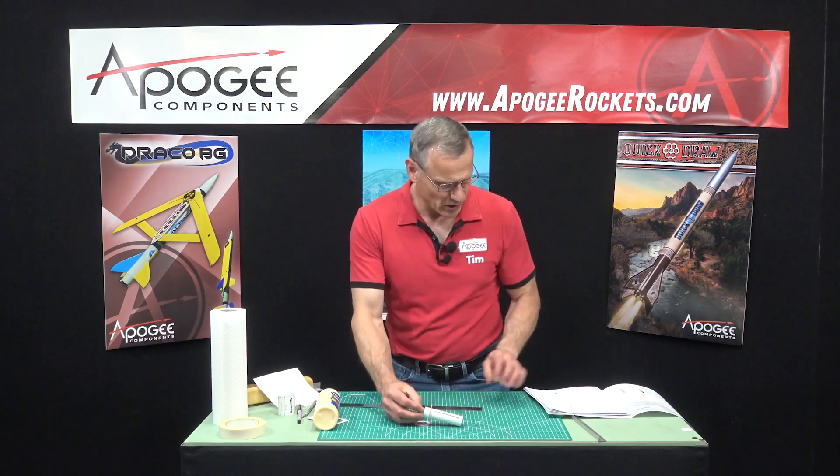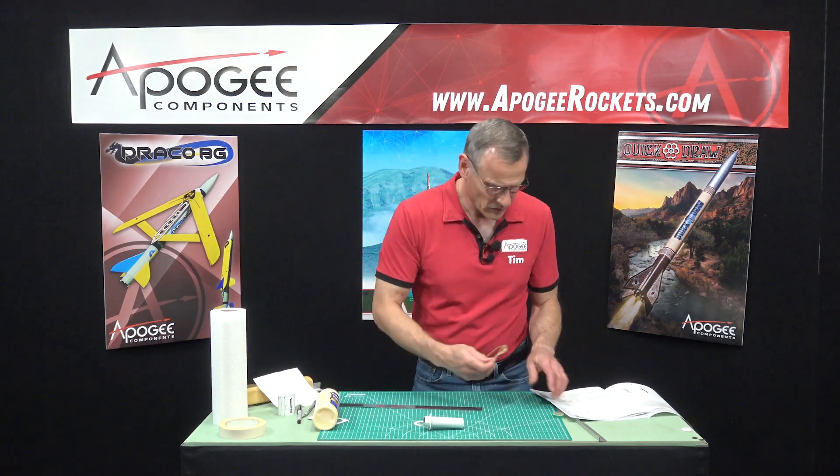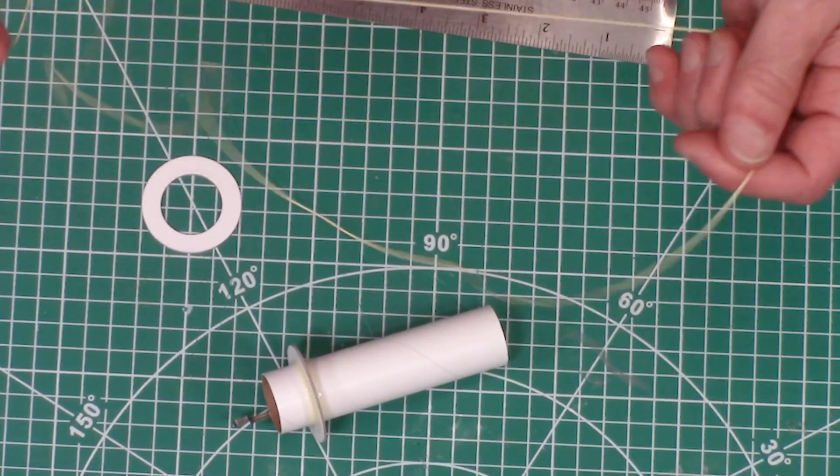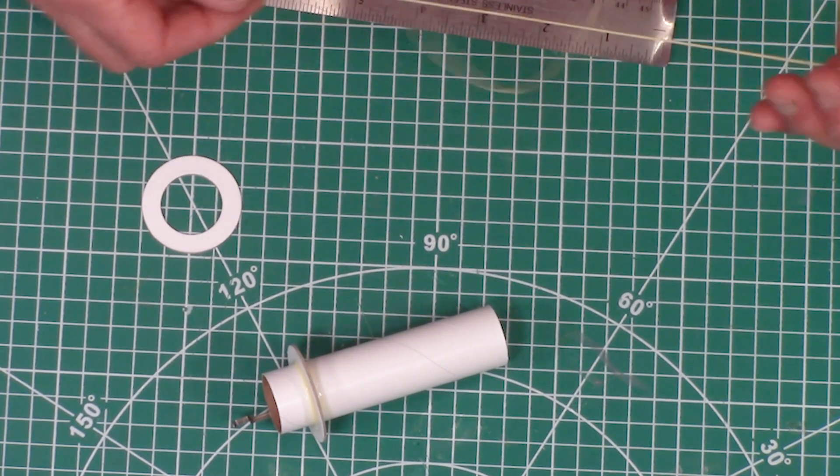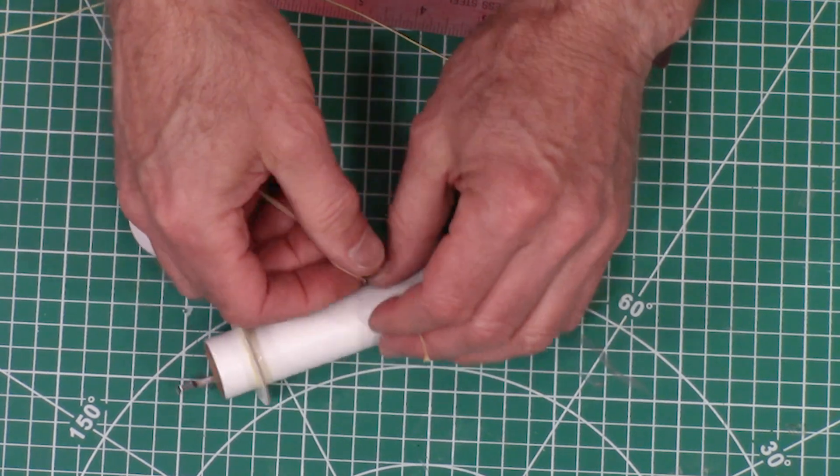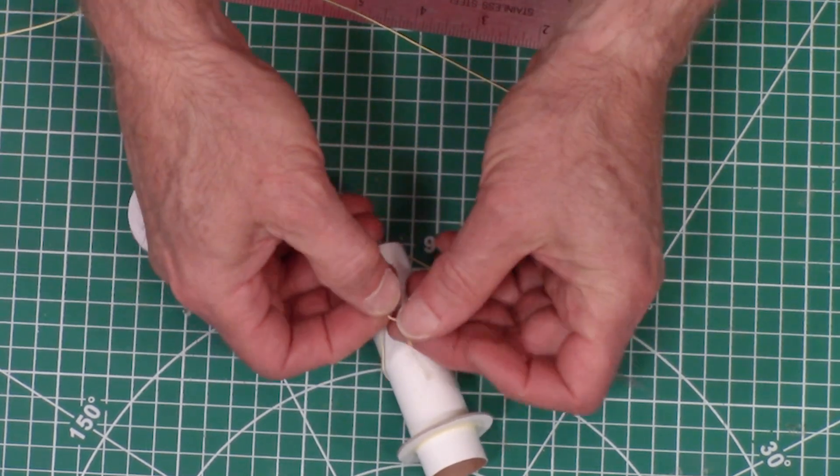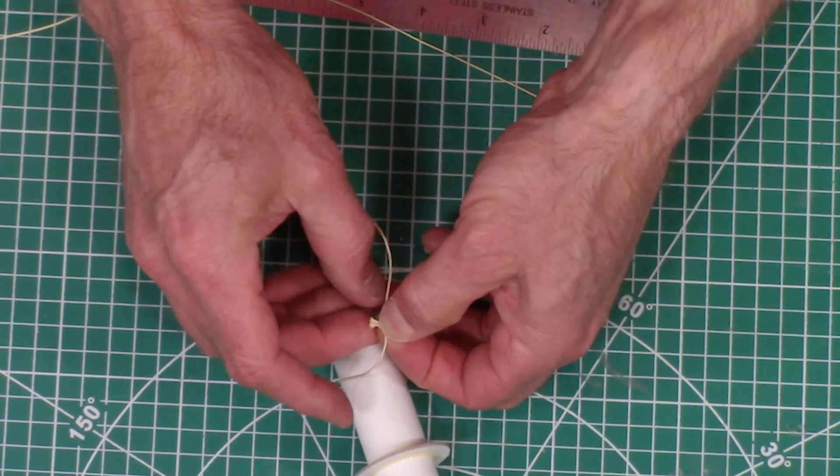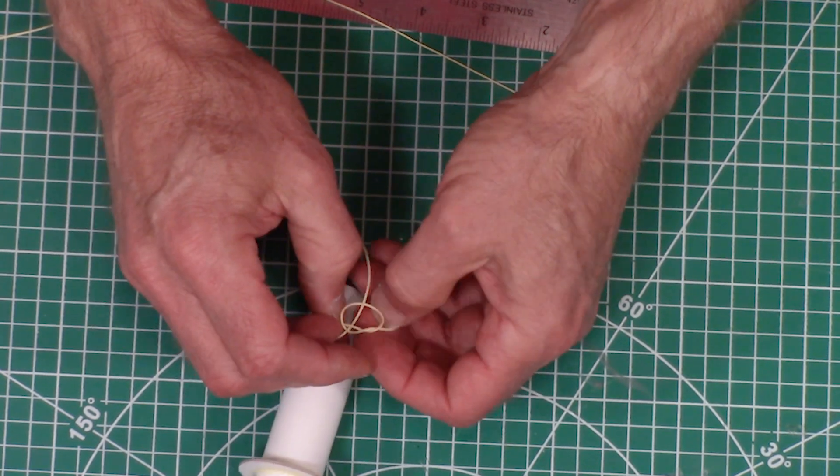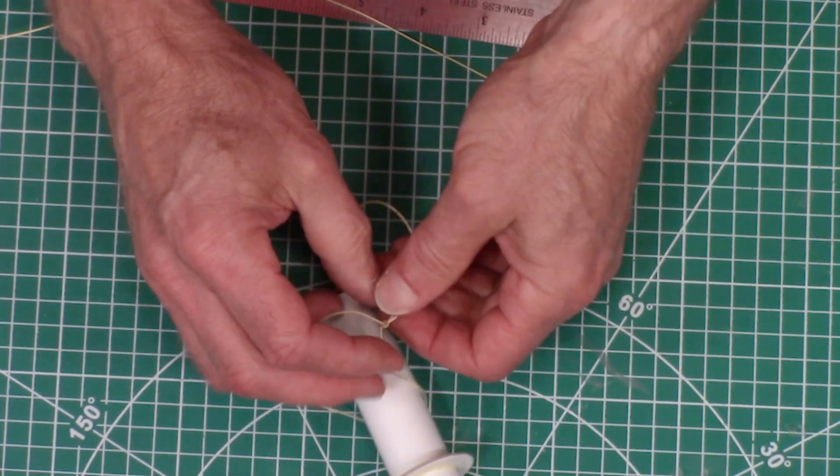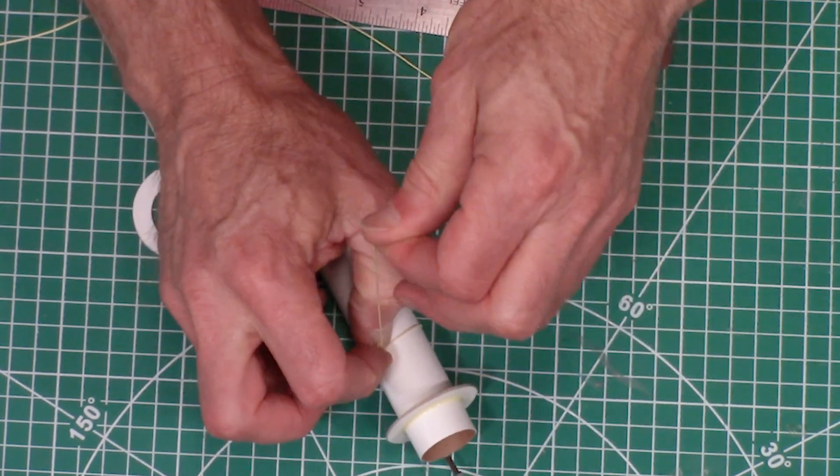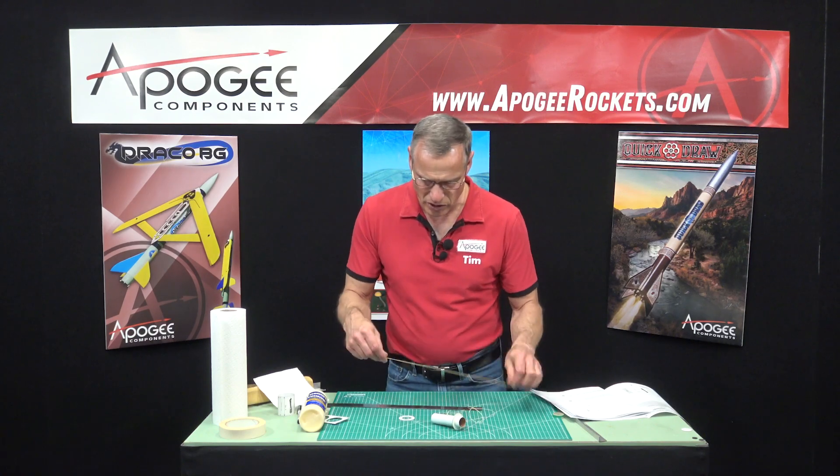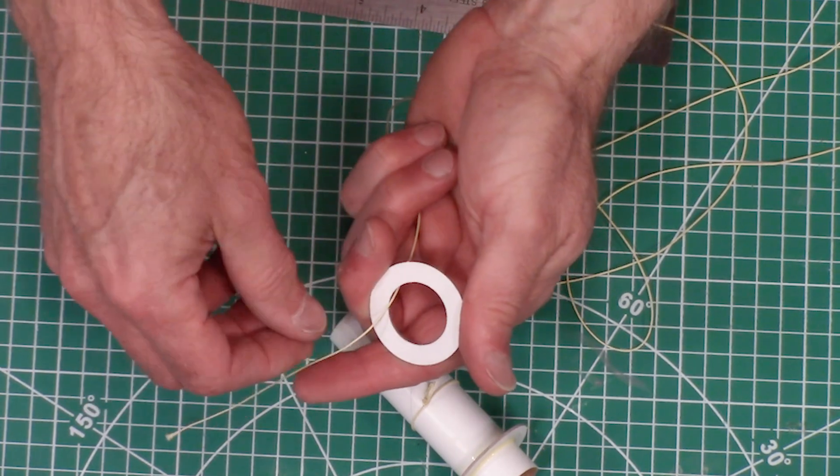Then we're going to take our yellow shock cord. This is step four. We're going to tie it around the tube before we put the other centering ring on. I've got a loop and a slip knot here, so I'm just going to cinch it down.